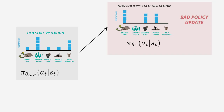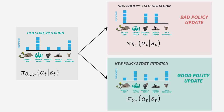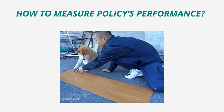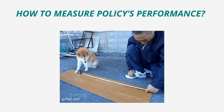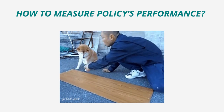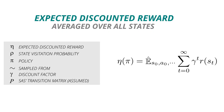This problem is taken care of by having more carefully crafted policy updates. So how do we measure the performance of a policy model theoretically? You just need to know the maximum expected discounted reward. This is precisely the quantity we are interested in.